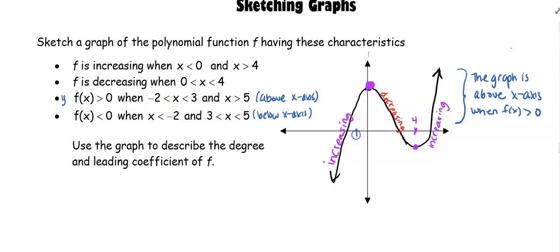So that means that this right here is negative 2 because this is the point where my graph is above the x-axis and it's staying above the x-axis between negative 2 and positive 3. So that means that that point is going to be 3.